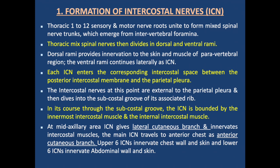So from T1 to T12 — thoracic 1 through thoracic 12 — both the thorax and abdomen are supplied by the thoracic nerves. The upper six intercostal nerves innervate the chest wall and skin, and the lower six innervate the abdominal wall and skin.